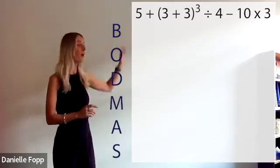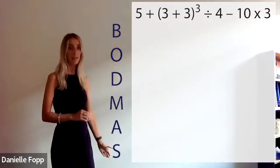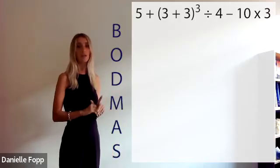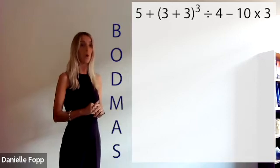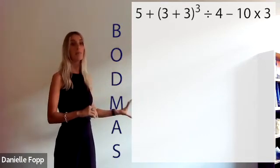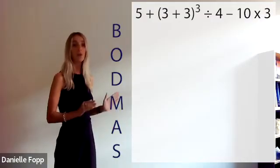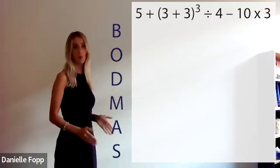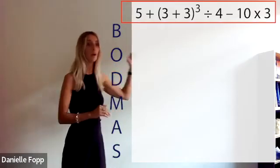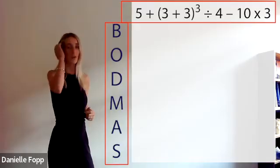Get a piece of paper and write BODMAS down the side. We're going to evaluate the equation on screen, so pause if you need to while you set that up. It's important to allow enough space between each letter because that will help you work through the equation. Equation at the top, BODMAS down the side.